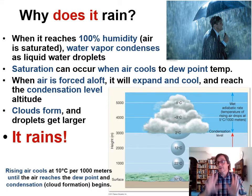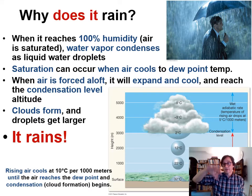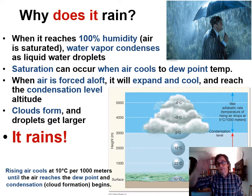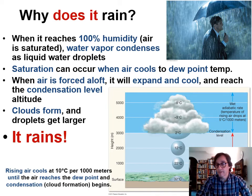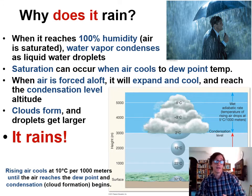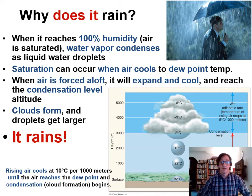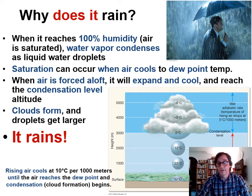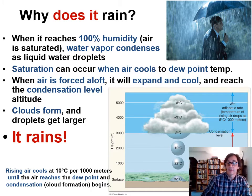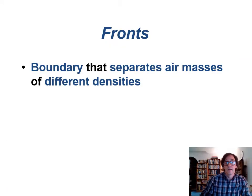After losing its moisture, that air carries on eastwards over the mountains — but now it's dry. It sinks into the lower ground past the mountains, warming as it sinks, forming what's called a rain shadow desert. The air lost its moisture on one side of the mountains, but continues and sinks, producing very dry air on the other side.